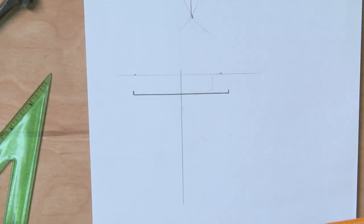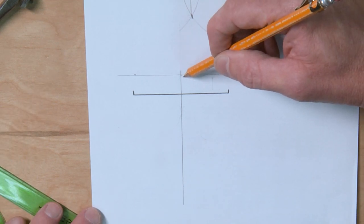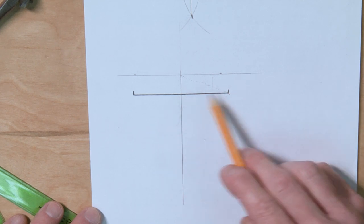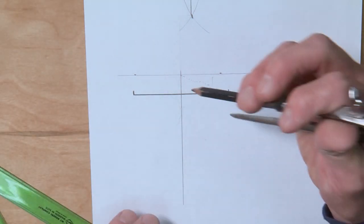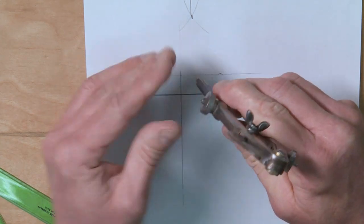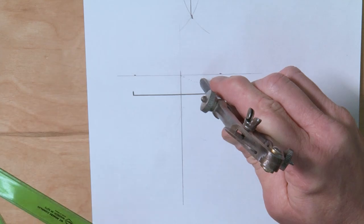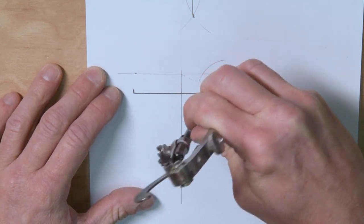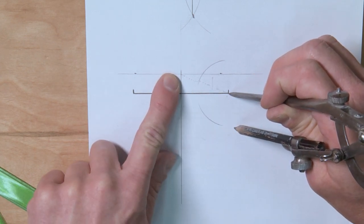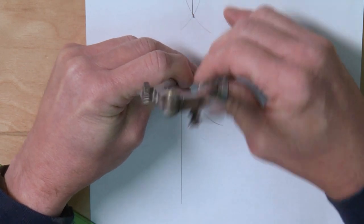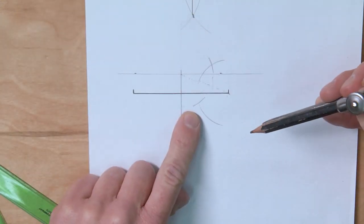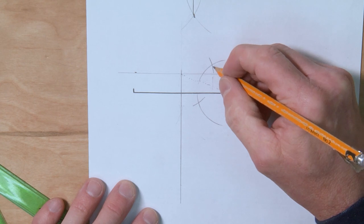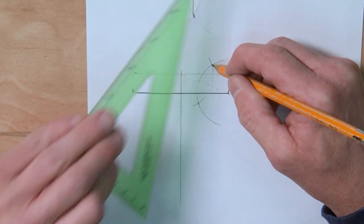Alright, so now what I want to do is I want to imagine a line going from the center to this point here to our end. And just like we did before to find the middle, we're going to set our compass up so it's more than halfway and I'll put an arc on top, I'll put an arc on the bottom. And now I want to move my compass to the top here.